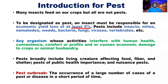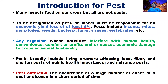We define a pest as an organism whose activities interfere with human health, convenience, comfort, and profit, or one that causes economic damage to crops and animal husbandry. For example, bed bugs cause inconvenience while you are sitting or sleeping. Mosquitoes will not allow you to sleep well.